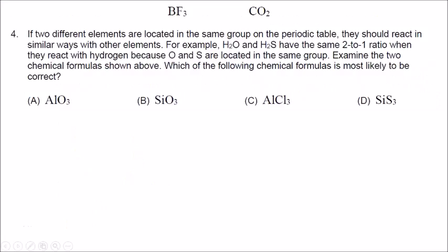Number four: if two different elements are located in the same group on the periodic table, they should react in similar ways with other elements. For example, H₂O and H₂S have the same two-to-one ratio when they react because oxygen and sulfur are located in the same group.